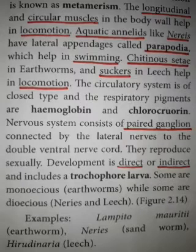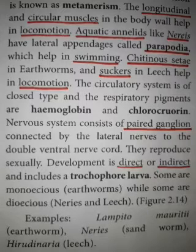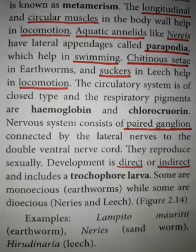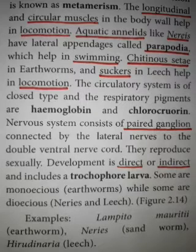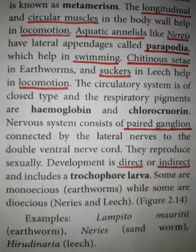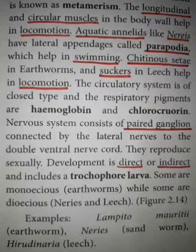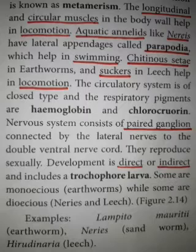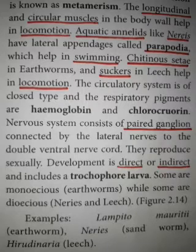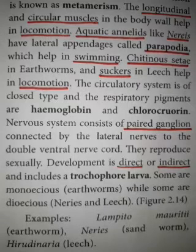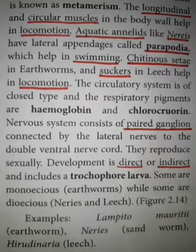The circular and longitudinal muscles help in locomotion. Apart from that, earthworms have chitinous setae that aid locomotion. In leech, there are anterior and posterior suckers that help in locomotion. So locomotion differs across organisms: Nereis uses parapodia for swimming, earthworms use chitinous setae, and leeches use suckers.